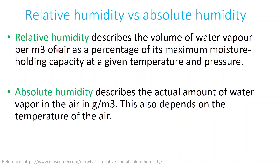In the experiments I used the term relative humidity, so I thought it's a good idea to explain what relative humidity and absolute humidity are. Relative humidity describes the volume of water vapor per cubic meter of air as a percentage of its maximum moisture holding capacity at a given temperature and pressure. Absolute humidity describes the actual amount of water vapor in the air in grams per cubic meter, and this also depends on the temperature of the air.